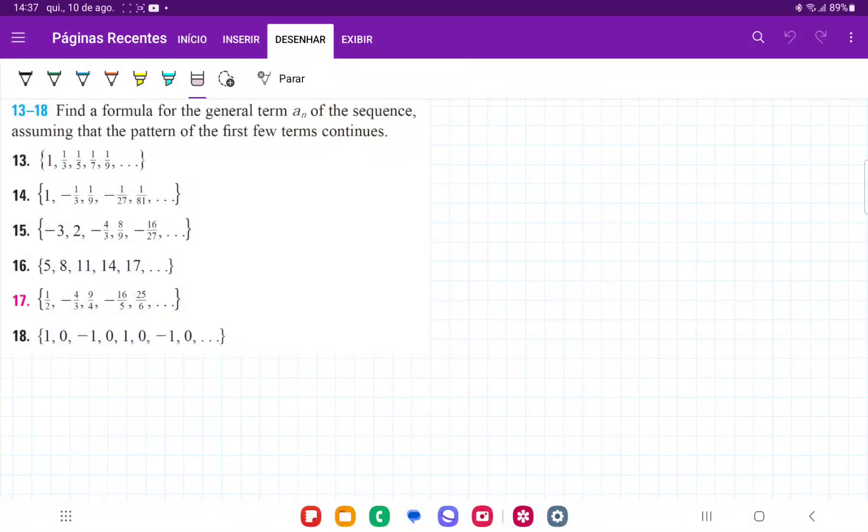For number 17, we are going to find a formula for the general nth term, assuming that it follows the same pattern. We have that a₁ equals 1/2, a₂ equals -4/3, a₃ equals 9/4, a₄ equals -16/5, and a₅ equals 25/6.